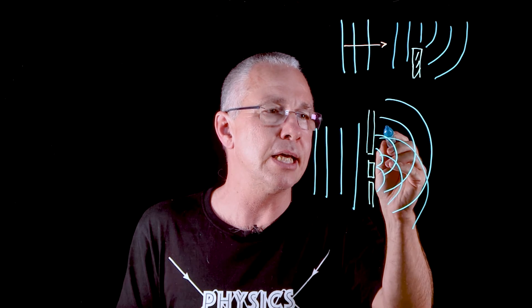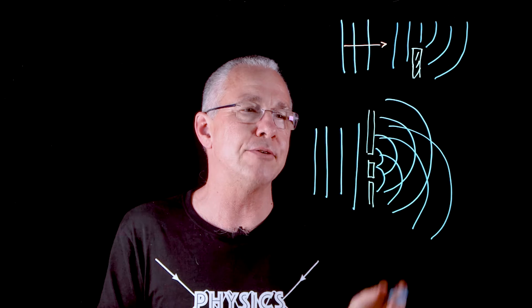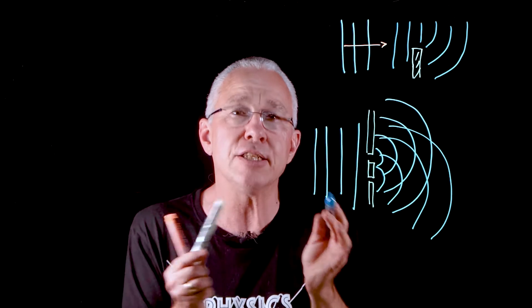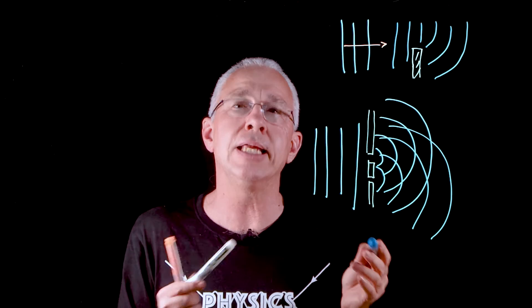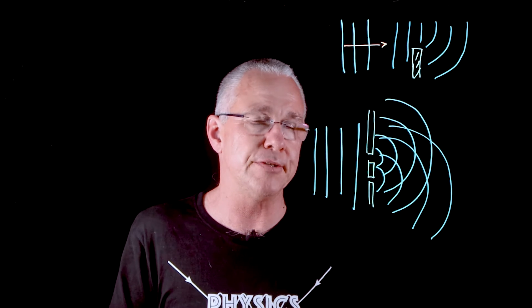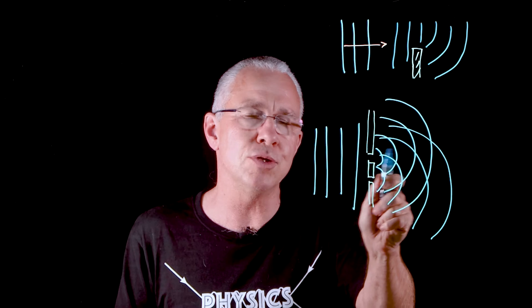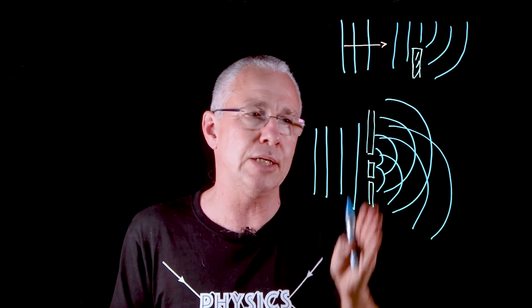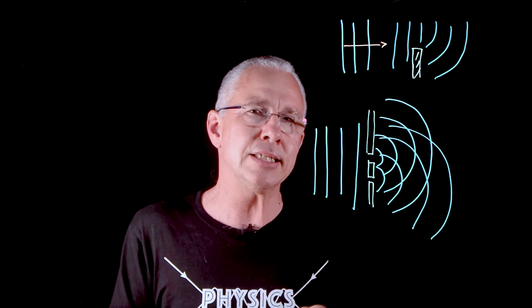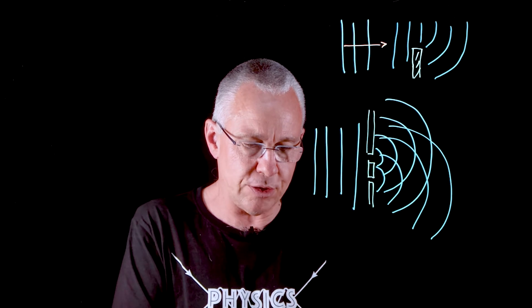What that means is we end up getting two sets of waves that are going around here and they're interfering with each other, and we end up getting a series of constructive and destructive interference. The diffraction here gives us the ability to have two sets of waves that are actually in sync with each other, and so that leads us to Young's double slit experiment.